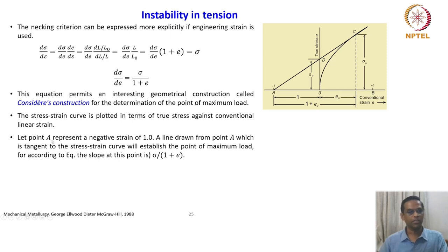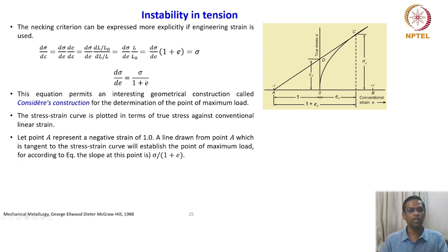Let point A represent the negative strain of 1. A line drawn from point A which is tangent to the stress-strain curve will establish the point of maximum load according to the Considère construction equation, where the slope dσ/de equals σ/(1+e) as shown.